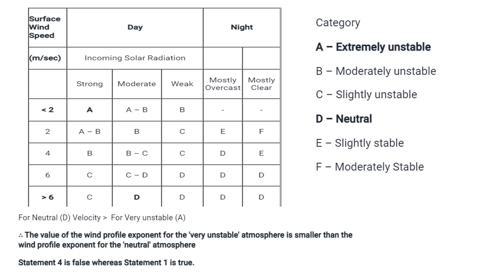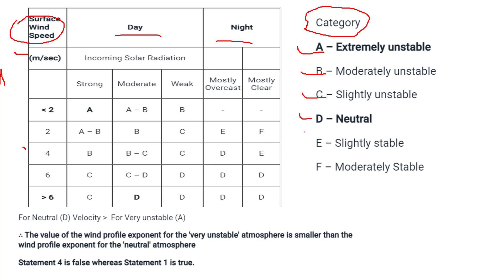Now see this table. This table shows surface wind speed in meters per second, with daytime and nighttime columns. Categories A, B, C, D, E, F are given: A means extremely unstable, B is moderately unstable, C is slightly unstable, D is neutral, E is slightly stable, and F is moderately stable. According to this table, we can easily say that the neutral category D has a velocity greater than the very unstable category A.